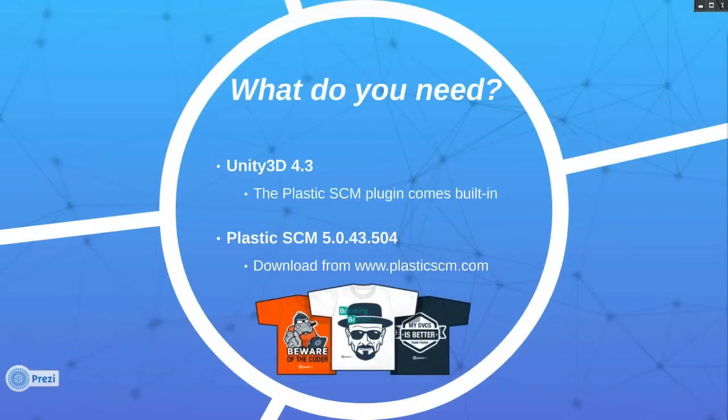So what do you need to get it working? The first thing is obviously Unity, and the second piece is Plastic SCM. You can grab our installer from our website. If you complete the evaluation guide, you can choose one of our free license designs. The plugin is automatically installed with Plastic SCM, so you don't need to install anything else. The installation process is extremely easy — clicking the Next button and choosing the authentication mode is everything you need to do.